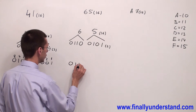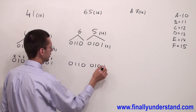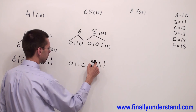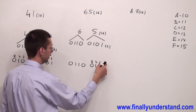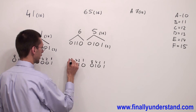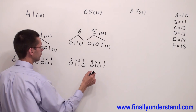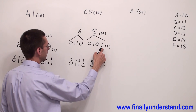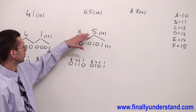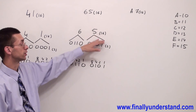To verify: 01100101. The weights are 1, 2, 4, 8. For 0110: 4 plus 2 gives me 6. For 0101: 4 plus 1 gives me 5. So this binary number corresponds to the value 65 base 16.